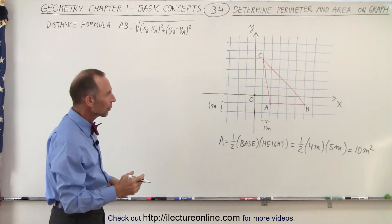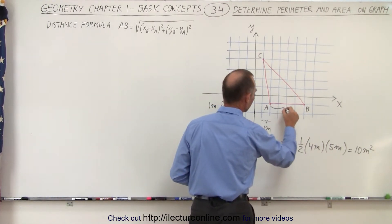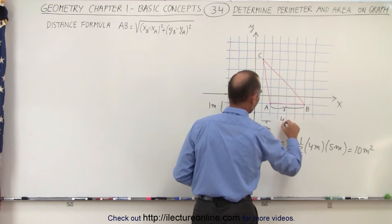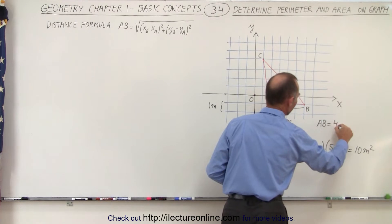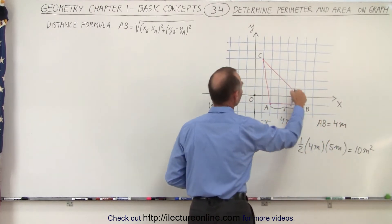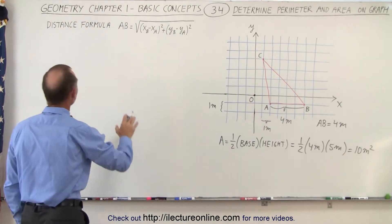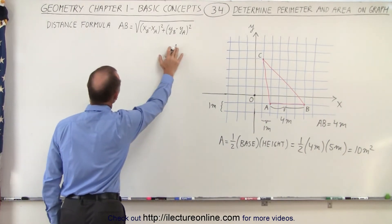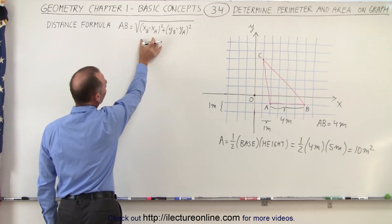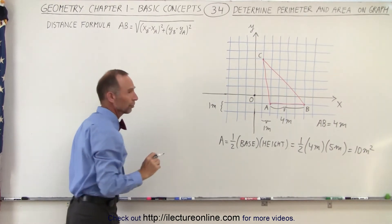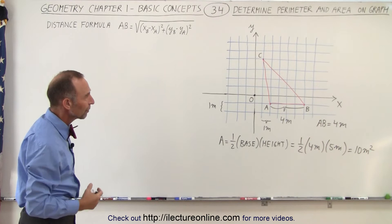Now to find the perimeter, we're going to need to find the length of each of the sides. We've already determined that this side AB is equal to 4 meters, but we don't know the length from B to C or from A to C. We have to use the distance formula, which is the square root of the difference in the x-coordinates squared plus the difference in the y-coordinates squared.